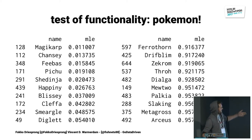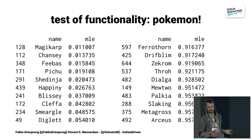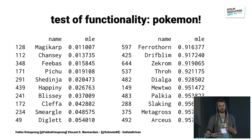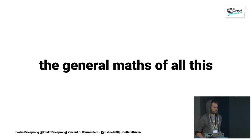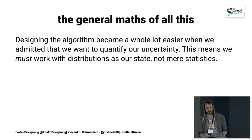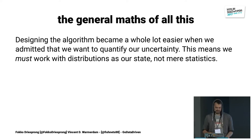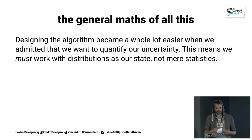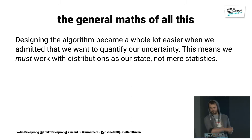Anyway, we've done Magikarp, we've done Mewtwo, this is all fun. We have a nice algorithm that kind of works, but let's take a step back and check what this means, because there is a general mathematics to everything I've just shown you. Designing algorithms became a whole lot easier when we admitted that we didn't just want to have the maximum likelihood of the skill, but we actually wanted to quantify the uncertainty as well. This means the state we keep track of for a player is a distribution, not just a mere statistic.